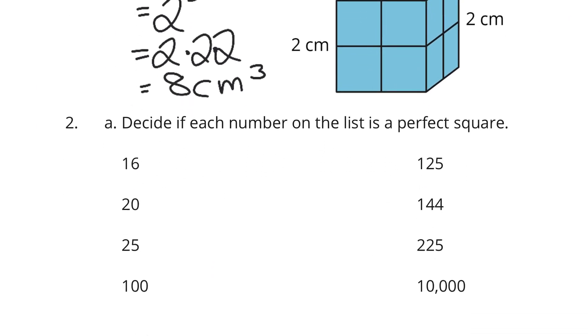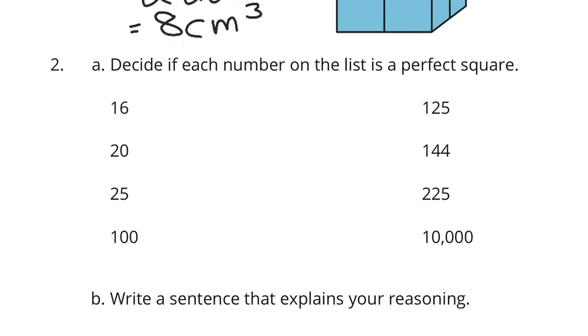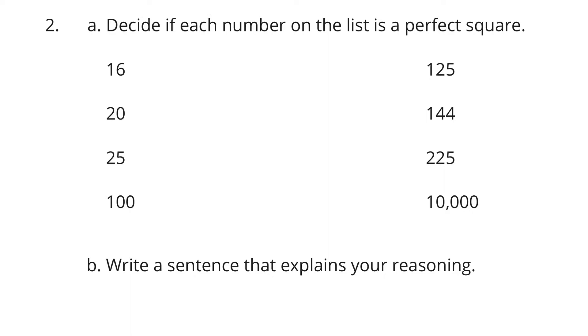Moving on to 2. Decide if each number on this list is a perfect square. Well, ask yourself, is there a number times itself that gets me to 16? Yes, 4. So 16 is a perfect square. What about 25? Because 25 is 5 times 5, so 25 is a perfect square, but 20 is not.